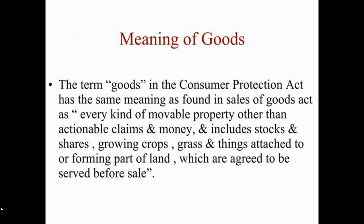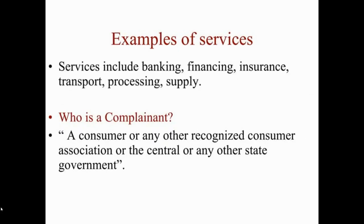The meaning of goods under the Consumer Protection Act carries the same meaning as in the Sale of Goods Act — any kind of movable property other than actionable claims and money, including stocks and shares, growing crops, grass, and things attached to or forming part of land, which are agreed to be severed before sale. Examples of services covered under the act include banking, financing, insurance, transport, and processing. A consumer, or any recognized consumer association, or the central or any state government can be the complainant.